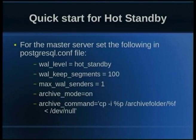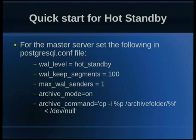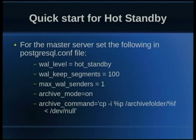Once you've taken a dump and shipped it to the standby server, you need to set up a few things in postgresql.conf on the master server: set wal_level to hot_standby, wal_keep_segments to 100 as a starting point (depending on your scenario), and max_wal_senders to the number of slave servers you have — set to 1 if you're setting up one slave server. Also, archive_mode should be enabled, and archive_command set to ship new WAL log files to your archive folder.